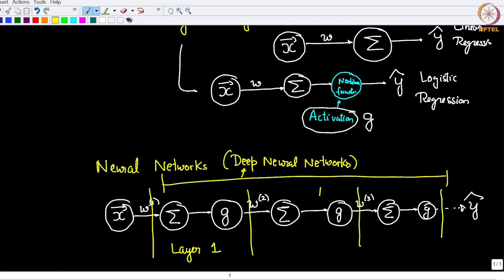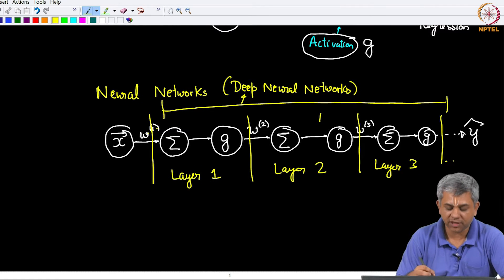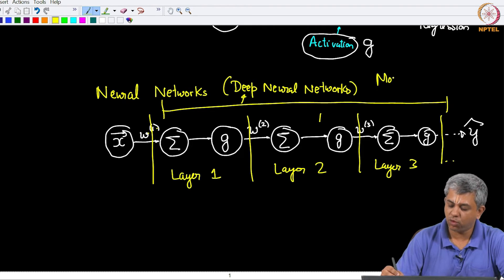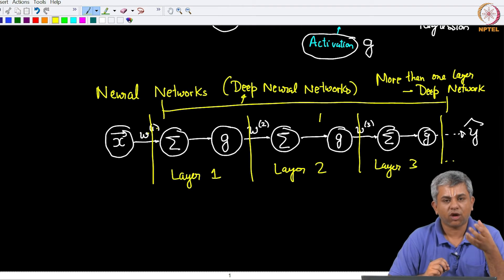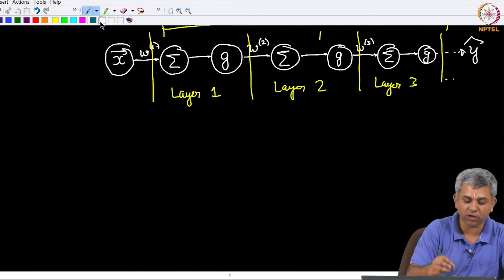Each of these combinations of sigma and g is called a layer. This is layer 1, hence w1, layer 2, layer 3, so on and so forth. So a deep neural network is one which has more than one layer. That is all. If you have more than one layer, it is called a deep network. So this in a nutshell is all there is to learn within deep learning, at least in terms of simple implementation.